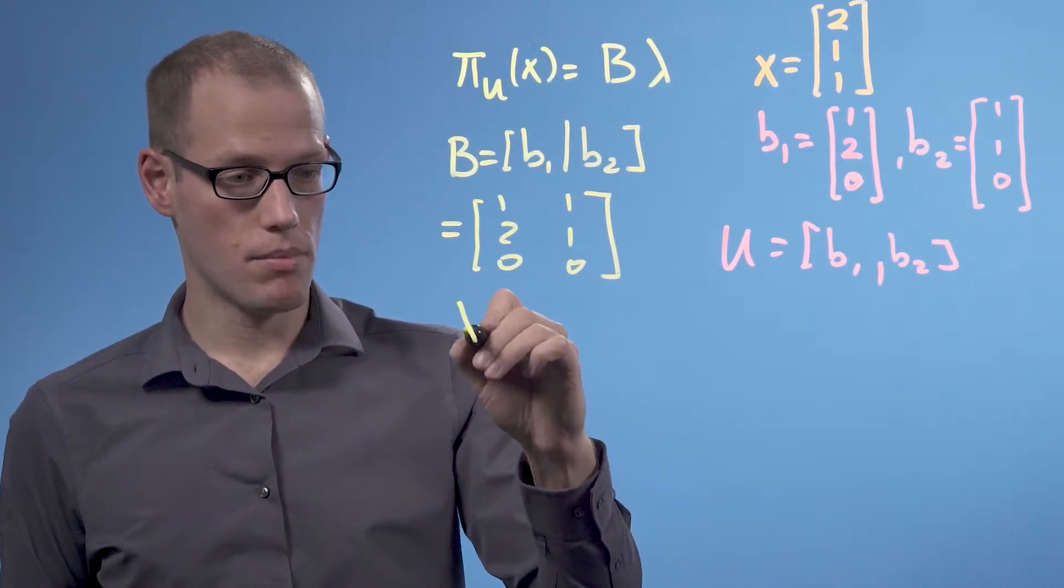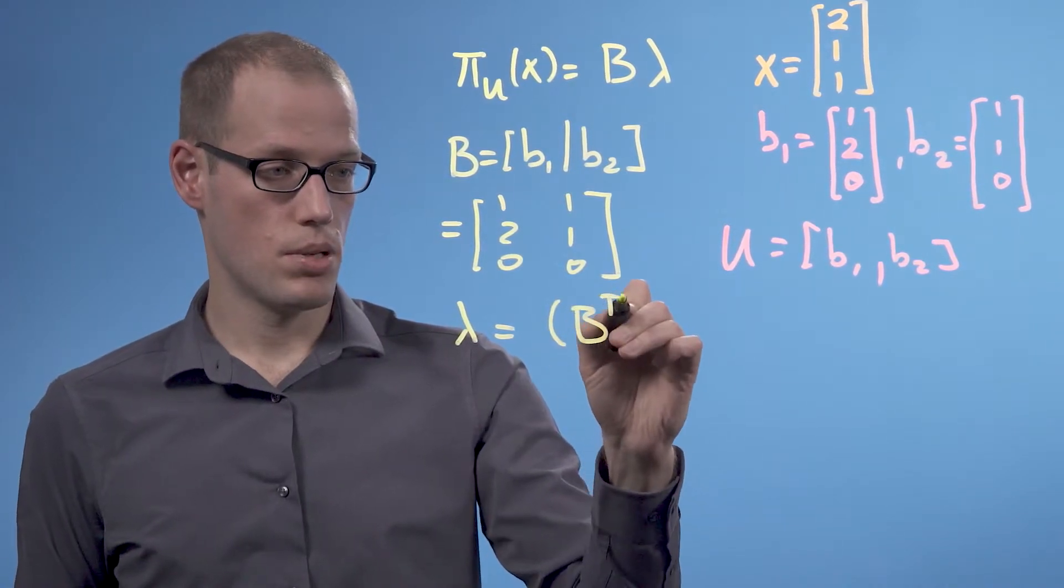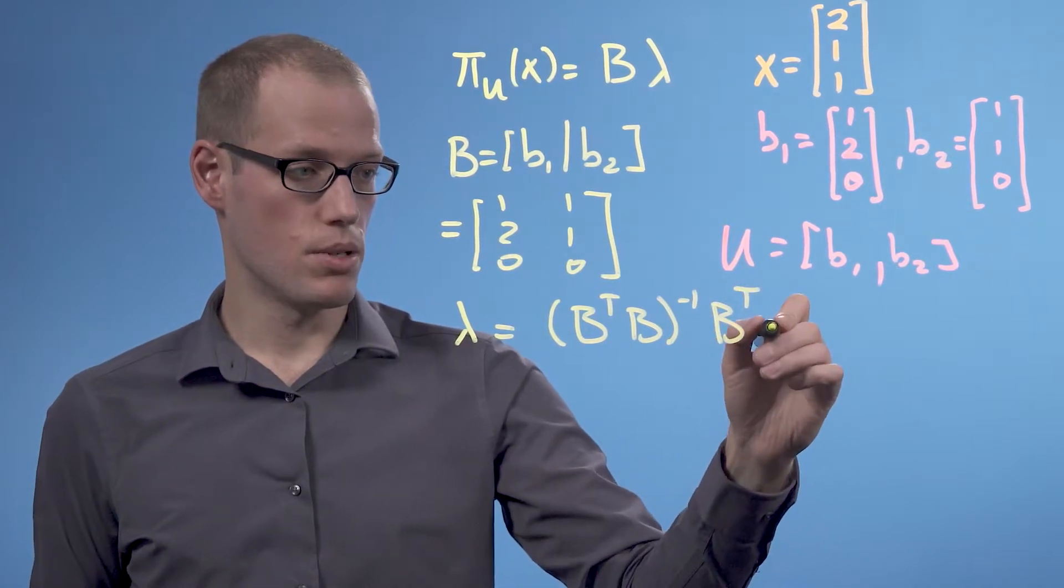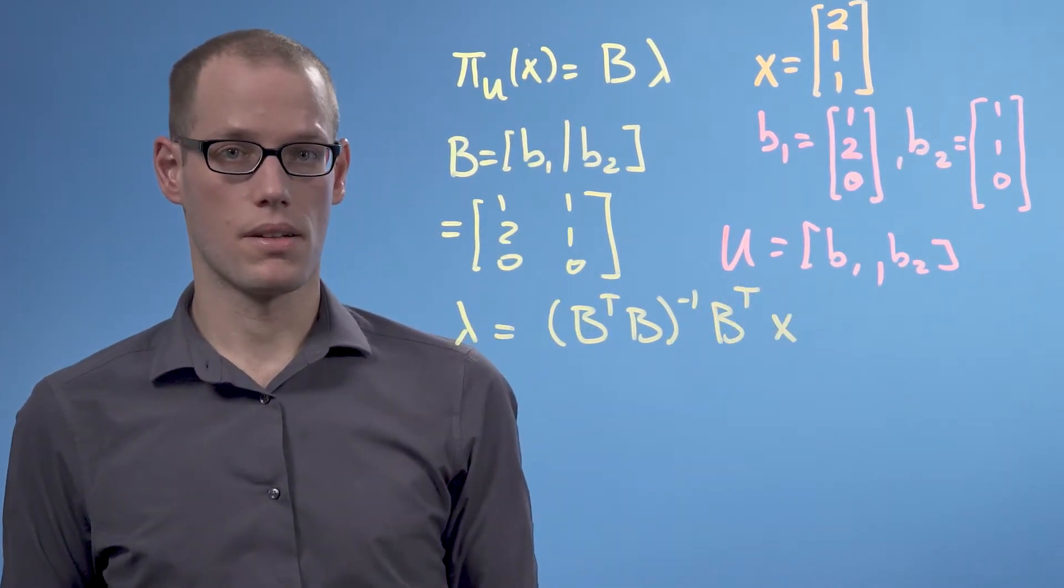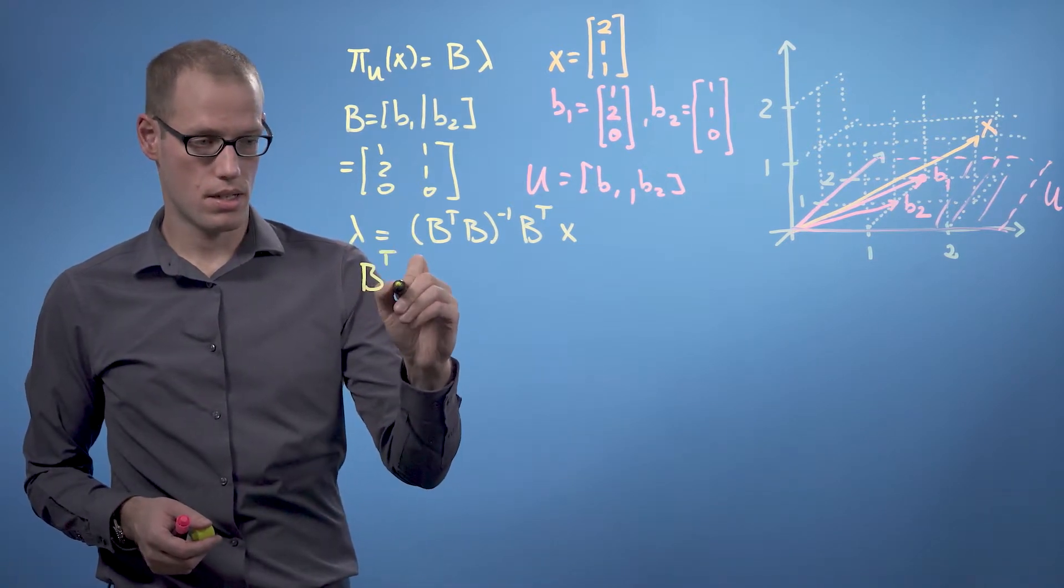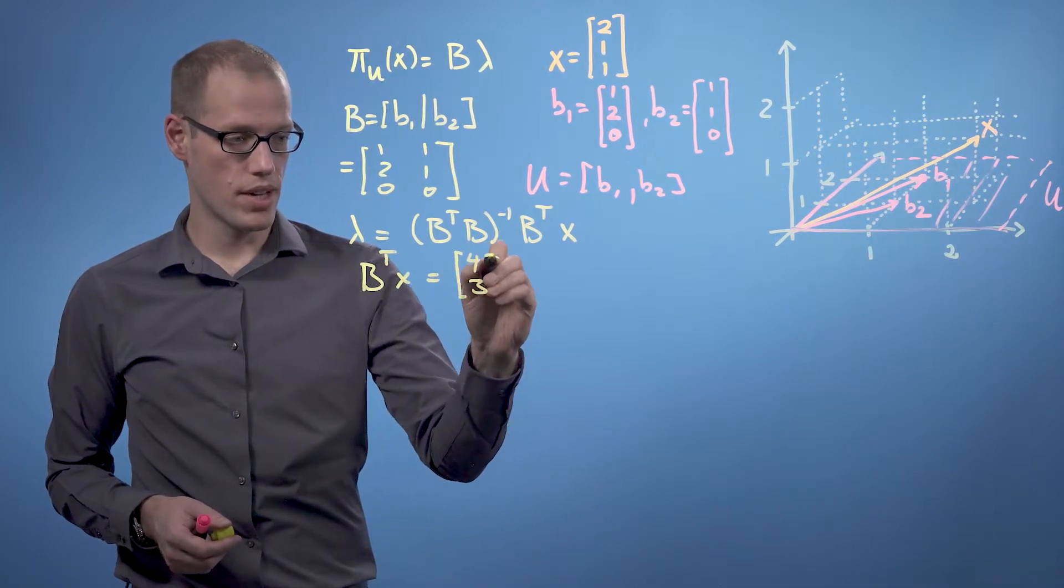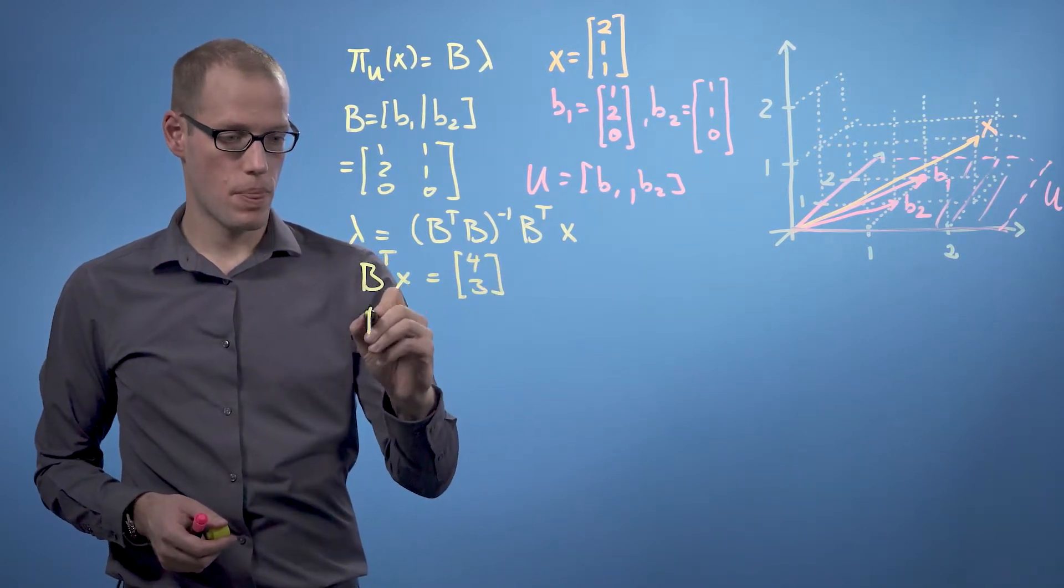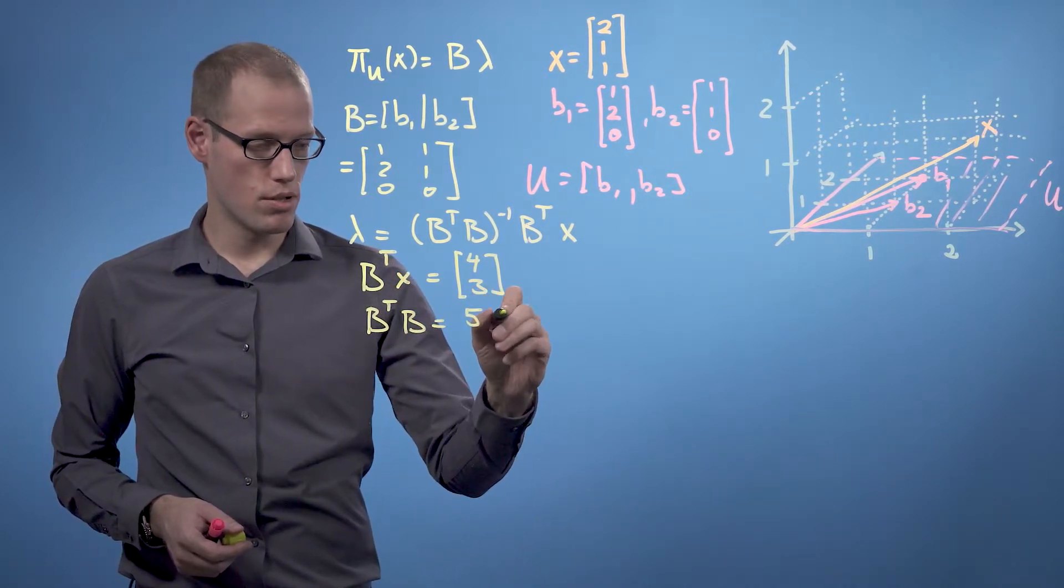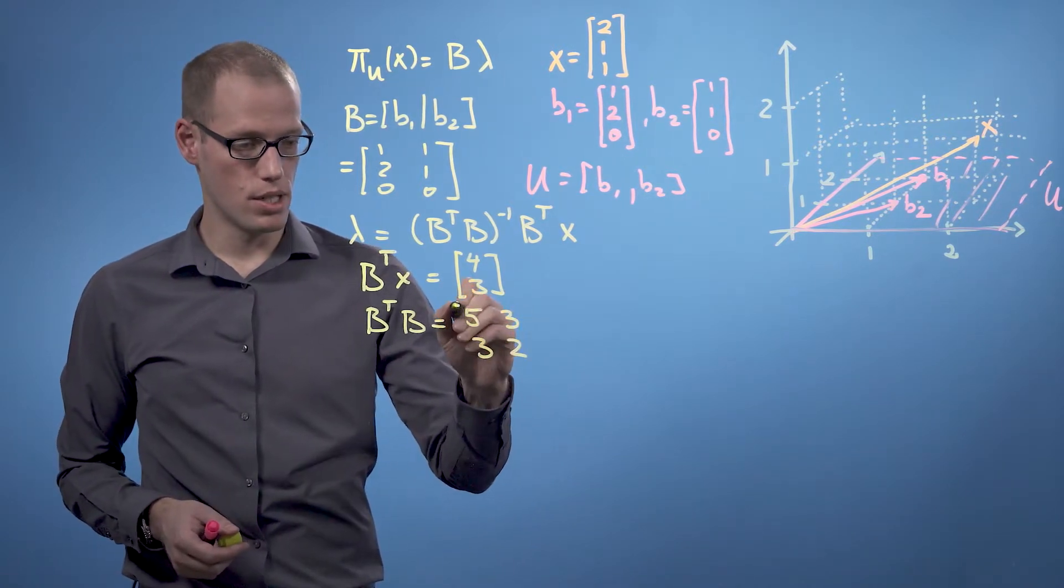And lambda was given as b transpose b inverse times b transpose x. b transpose times x is given as 4, 3 vector. b transpose b is a 2 by 2 matrix, which is 5, 3, 3, 2.